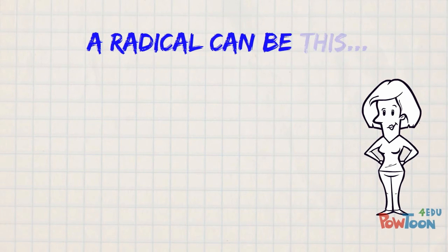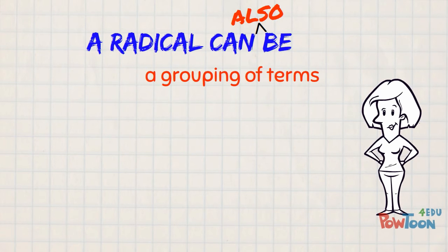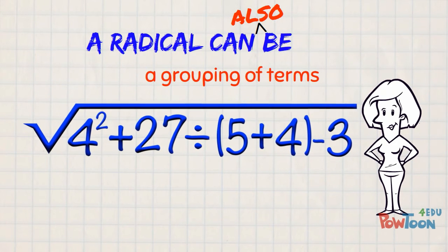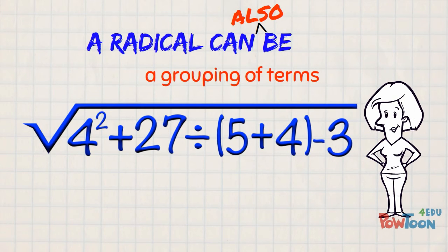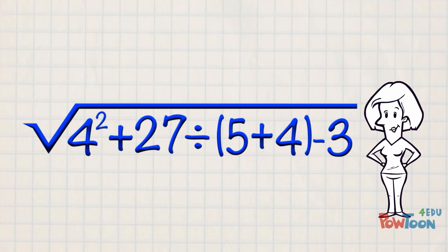And a radical can also be a grouping of terms like this. This problem means that everything that sits under the radical, under that square root sign, has to be worked out first, and then you find the square root of that result. To evaluate it, we use the order of operations. So here we go, using BEDMAS.